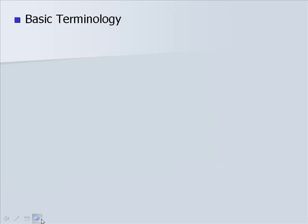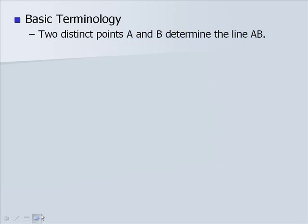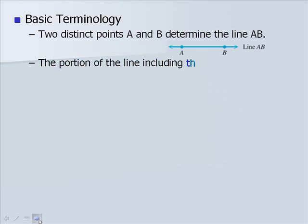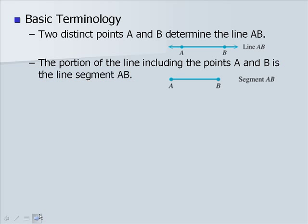First we'll go over some basic terminology. Two distinct points A and B determine the line AB. A portion of the line, including the points A and B, is what we call the line segment between A and B.